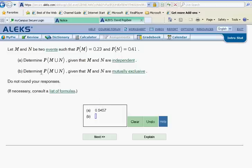Now, we're going to ask once again for the probability of M or N, but this time they tell us that the two are mutually exclusive. So we have to know what that means. Let's go back here and look at our notes.